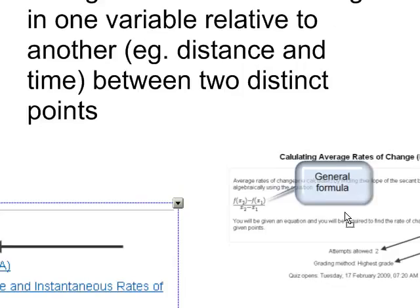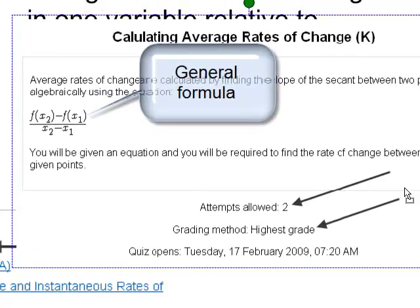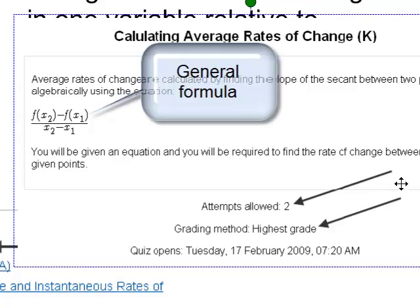When you click into that, you will actually see the general formula for calculating the average rate of change. Notice in this quiz that you've got two attempts, and it's going to take your highest grade. So if your first attempt doesn't work out, take another attempt. This quiz is going to take the highest grade.